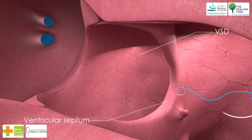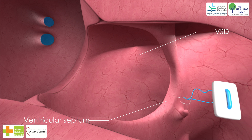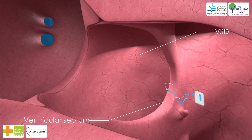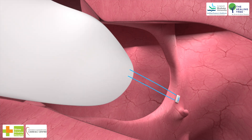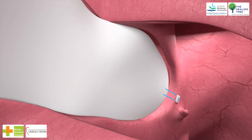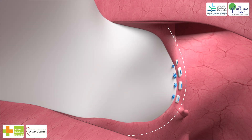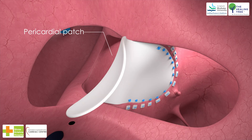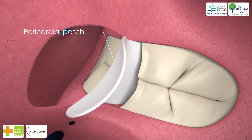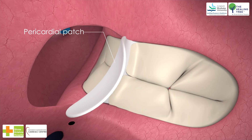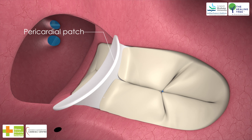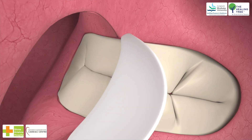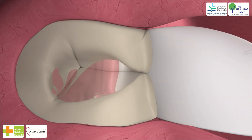The bundle of His enters the ventricular septum close to the AV node and is vulnerable particularly at the inferior end of the ventricular septal suture line. At this point, the suture line should be kept to the right of midline. Steps 5 and 6: the superior and inferior common leaflets are resuspended on the pericardial patch using a continuous horizontal mattress 6-0 Prolene suture.